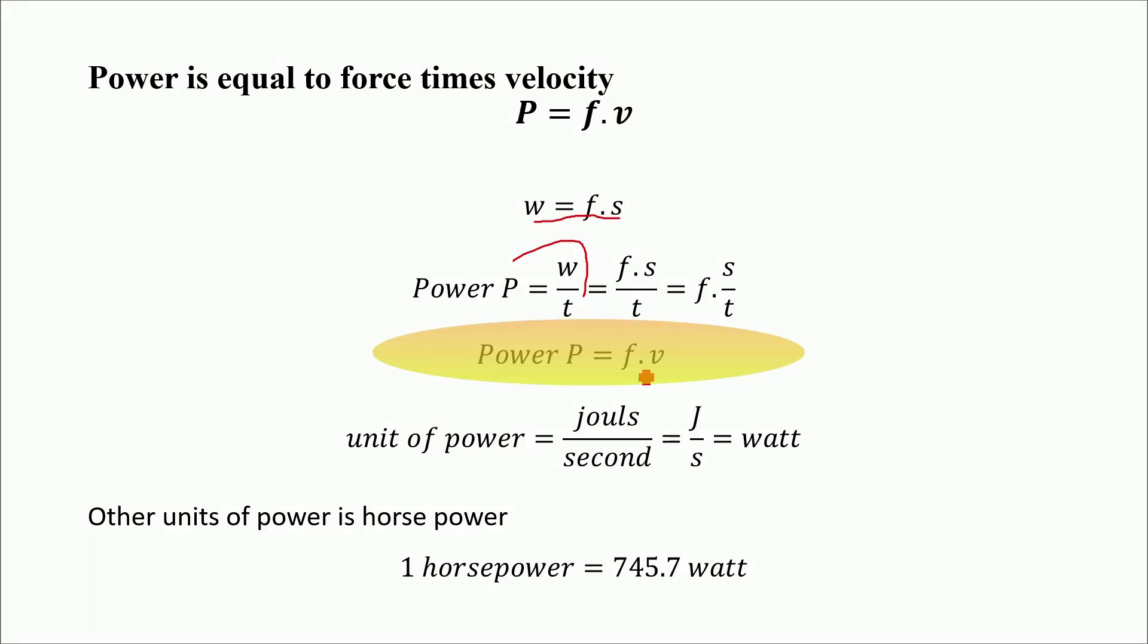So we have power P equals f dot v, force times velocity. Unit of power is joule per second, where joule is the unit of work and second is the unit of time. So we have joules per second, which is equal to watt.